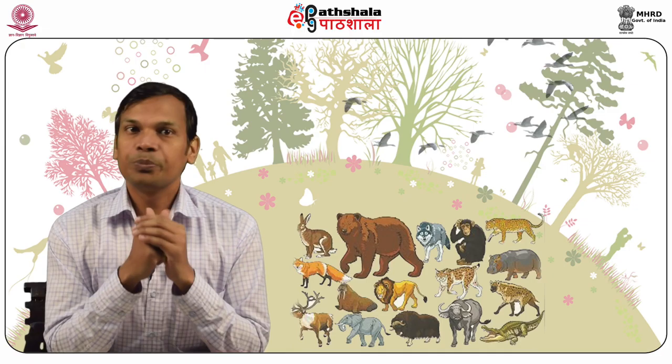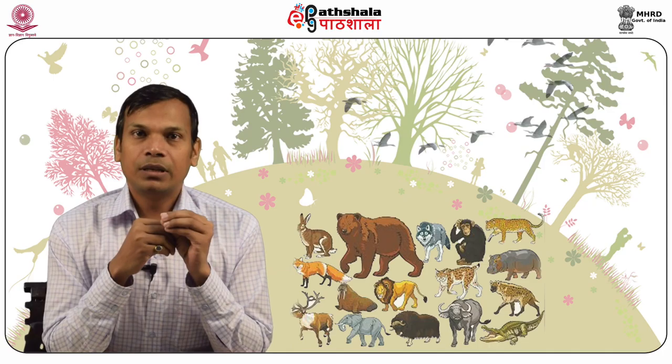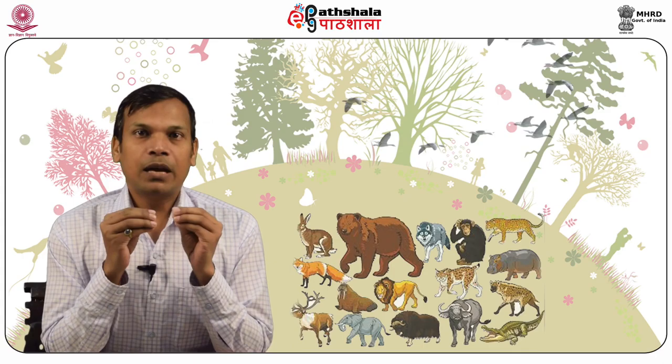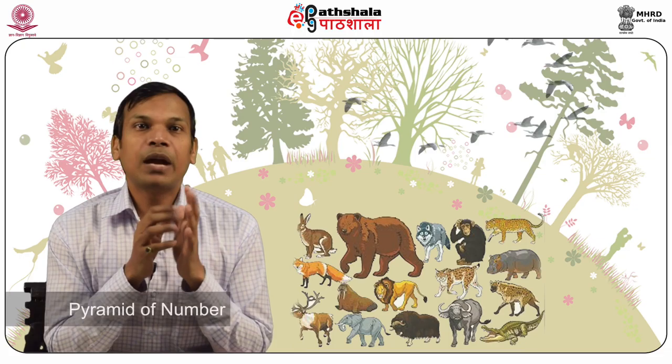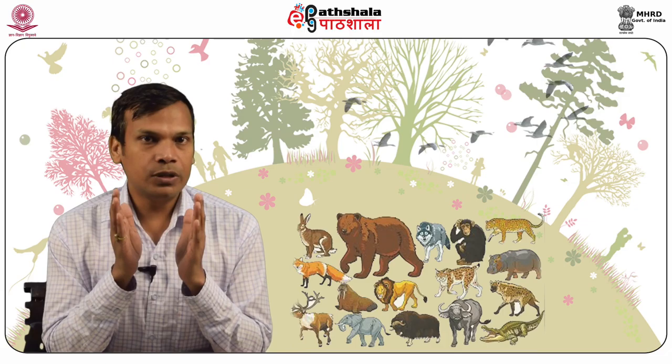Significance of food chain. Both food chain and food web maintain the nutrient cycle and energy flow. Food chains play an important role in understanding the feeding relationships and interactions between organisms in the ecosystem. Food chains help in maintaining ecological balance by sustaining the size of populations, and also help to understand the movement of toxic substances in the ecosystem and the problem of biological magnification.